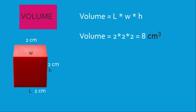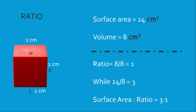Now let us look at the surface area to volume ratio. We have looked at the surface area and the volume. We are going to divide by a number common to both to bring it to its simplest term. Dividing 8 into 8 gives 1, and 8 into 24 gives 3. So the surface area to volume ratio is equal to 3 to 1.